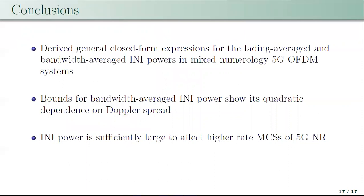In conclusion, the key takeaways are: we derived general closed-form expressions for the fading-averaged and bandwidth-averaged INI powers in a mixed numerology 5G OFDM system, accounting for all numerologies in 5G NR and guard band. We derived bounds for bandwidth-averaged INI power and showed its quadratic dependence on Doppler spread. Through simulations, we showed that INI power is sufficiently large to affect higher-rate MCS in 5G NR. Thank you.